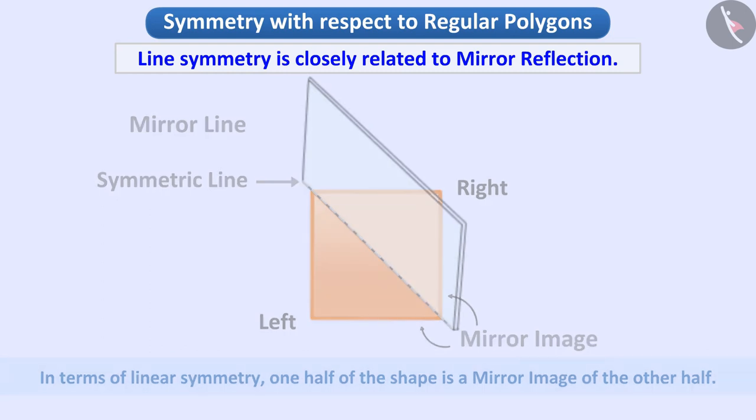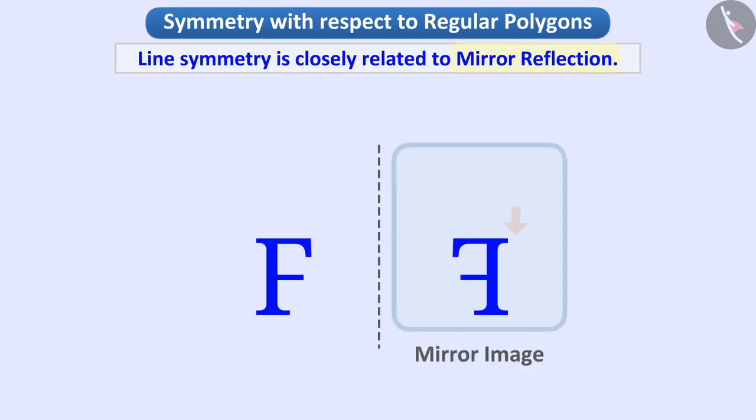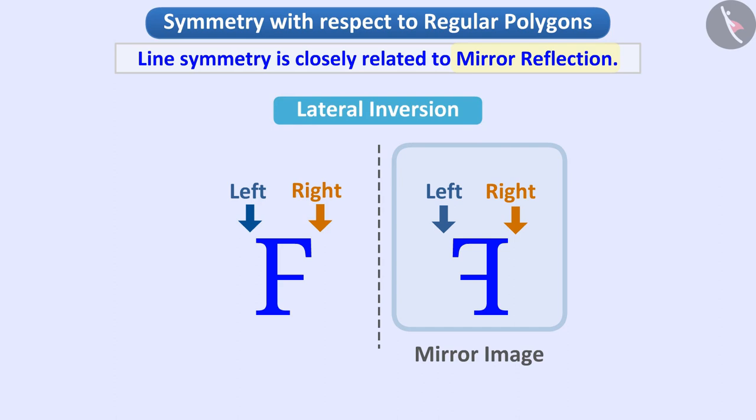Keep in mind, in mirror reflection, there is a left-right change in the orientations of the shape, which we call lateral inversion. This means that the right part of the shape becomes the left part of the image and the left part of the shape becomes the right part of the image.